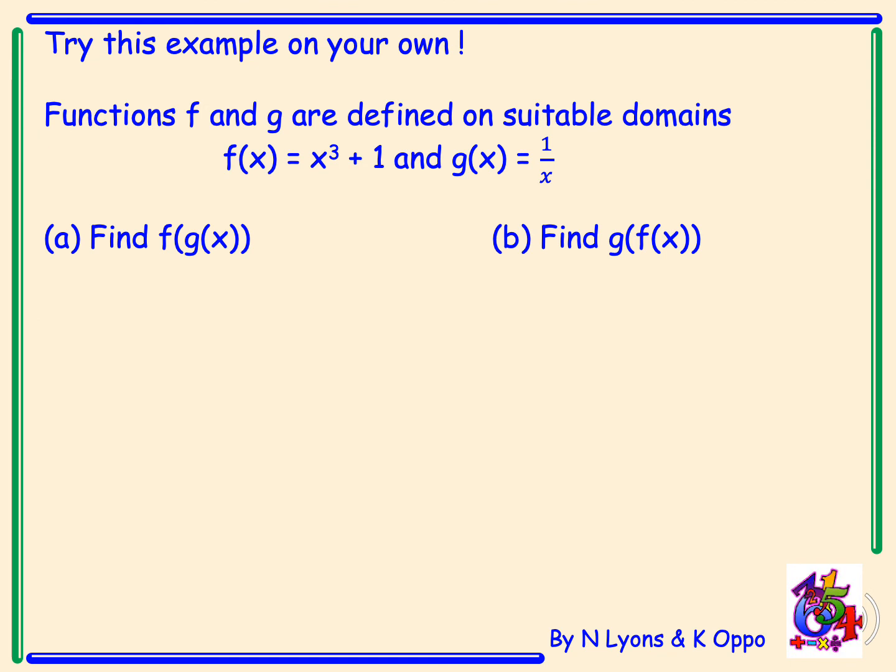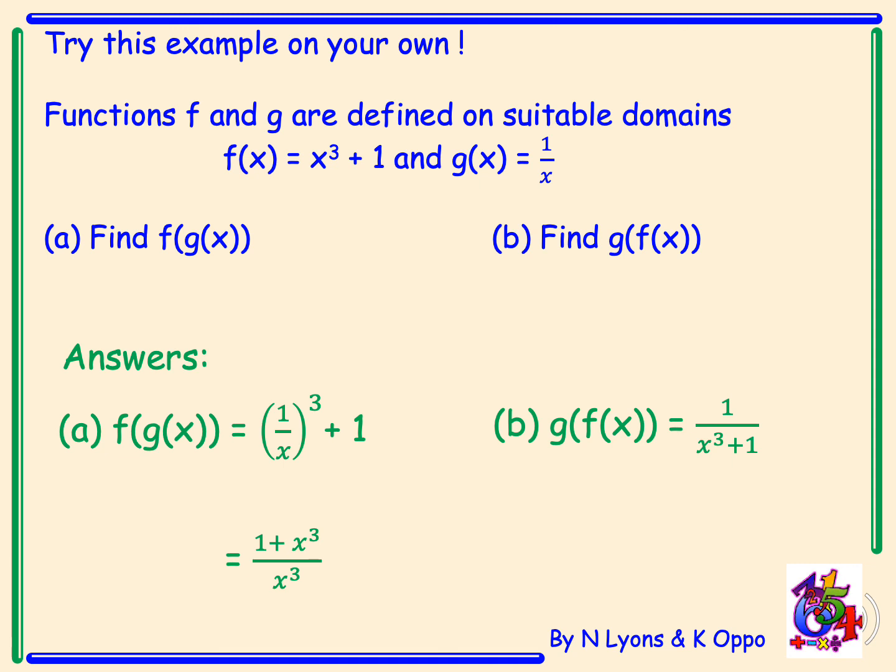Now try this example on your own. Please pause the video. And the answer is for a, f of g of x is equal to 1 over x all cubed plus 1, and this can be simplified to 1 plus x cubed all over x cubed. And the answer for b, g of f of x is equal to 1 over x cubed plus 1.